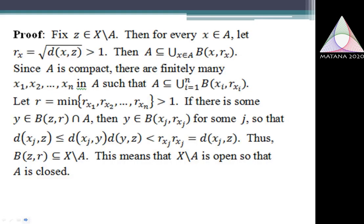Next, two propositions related to that: if I begin with a Compact Subset of an M-Matrix Space, that M-Matrix Space need not be compact. But if I begin with a Compact Subset of an M-Matrix Space, then the Compact Subset should necessarily be a closed one. I come to the proof with standard arguments. To establish that A is closed, I try to prove that X minus A, the complement of A, is open.